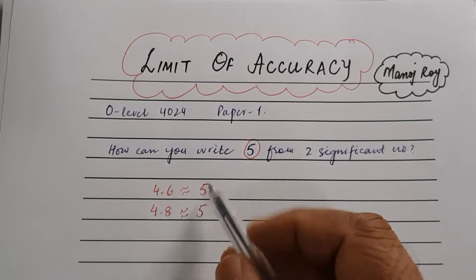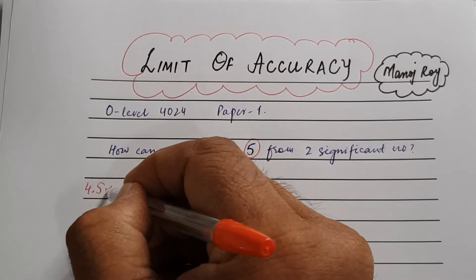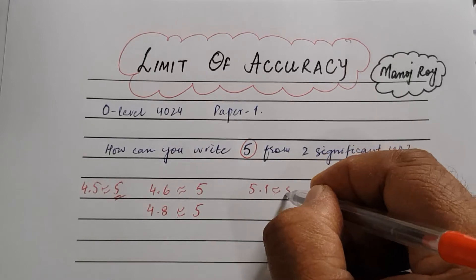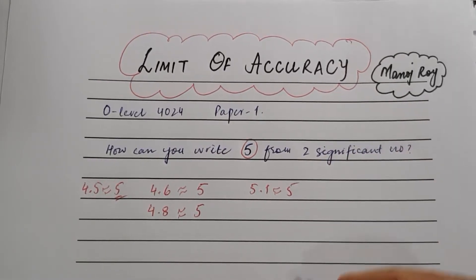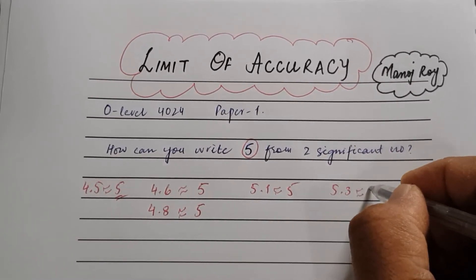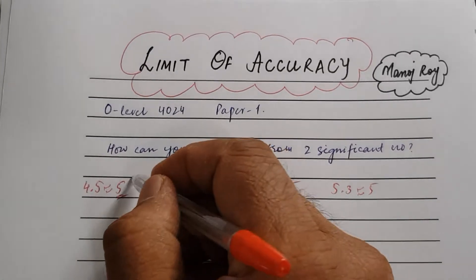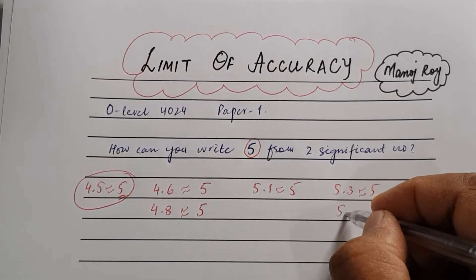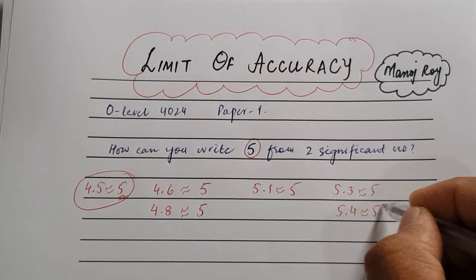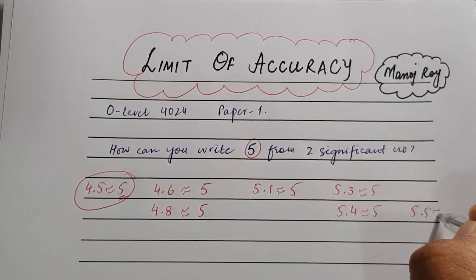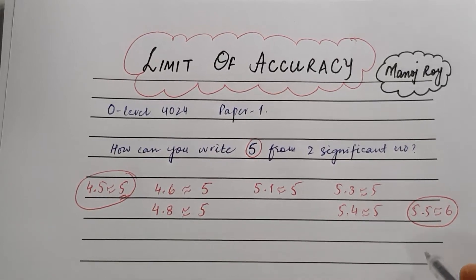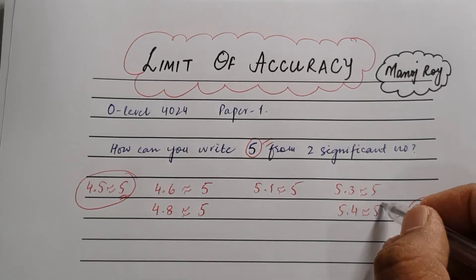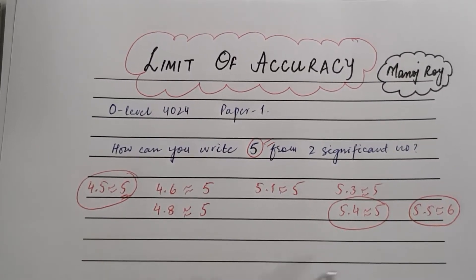The minimum number that gives you 5 is 4.5, because 4.5 rounds up to 5. Numbers like 5.1, 5.3, 5.4 also round to 5. But 5.5 would round to 6, not 5. So the maximum number that still gives 5 is 5.4.